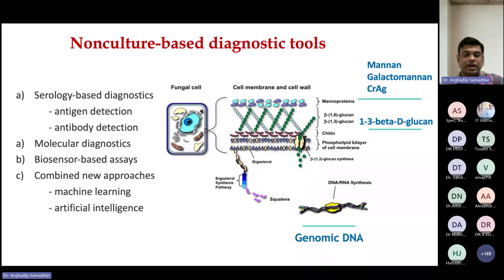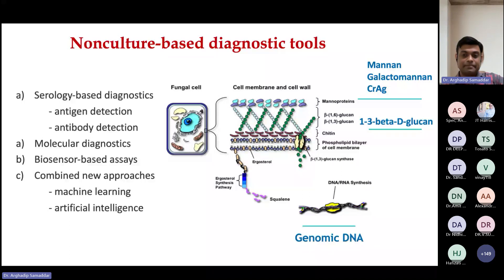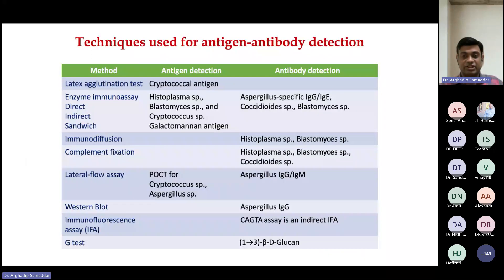Available non-culture-based modalities include serology-based diagnostics with antigen and antibody detection, molecular diagnostics, upcoming biosensor-based assays still in research, and combined approaches using machine learning and artificial intelligence. The fungal cell wall structure is important — the outer layer has mannoproteins including mannan, galactomannan, and galactoxylomannan. Beta-D-glucan is sandwiched between chitin and mannoproteins and is one of the key biomarker targets. Genomic DNA from the cell can be used for PCR-based assays.